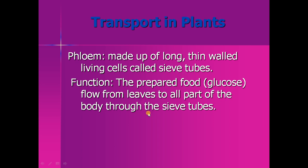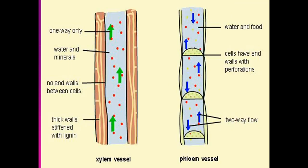Either for storage or for consumption. You can see here in this diagram: this is the xylem vessel, and in this xylem vessel the water and minerals are conducted from the root to the leaves. This is phloem tissue and these are the sieve tube cells. The sieve tube cells are arranged end to end, attached at the ends with small holes — they are perforated — so in this tissue the prepared food is carried from the leaves to all parts.